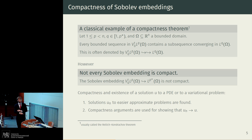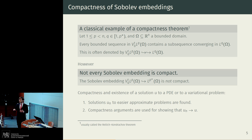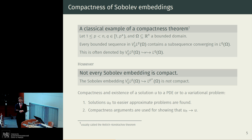You can see these various compactness arguments being used, for example, in analysis of partial differential equations or calculus of variations, especially when dealing with nonlinear problems. What's often done at the beginning is we prove the existence of certain approximate solutions to suitable, easier approximate problems. And once we have these approximate solutions, we somehow need to justify that they converge to the actual solution of the initial problem. That's where various compactness arguments are often used.